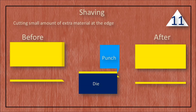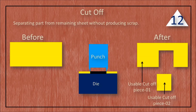Shaving is the process of cutting a small amount of extra material at the edge. Cut off is the process of separating a part from the remaining sheet without producing scrap.